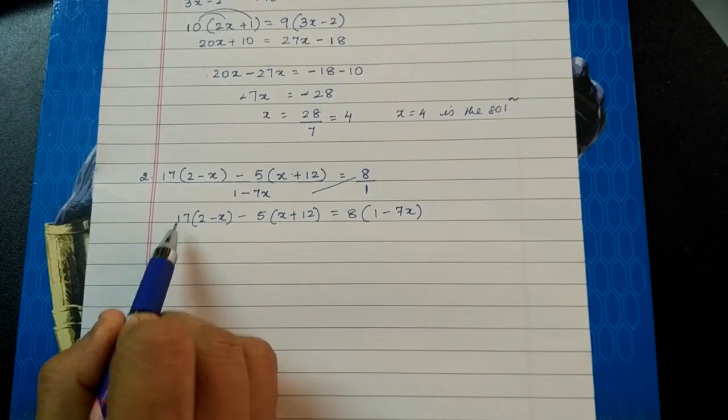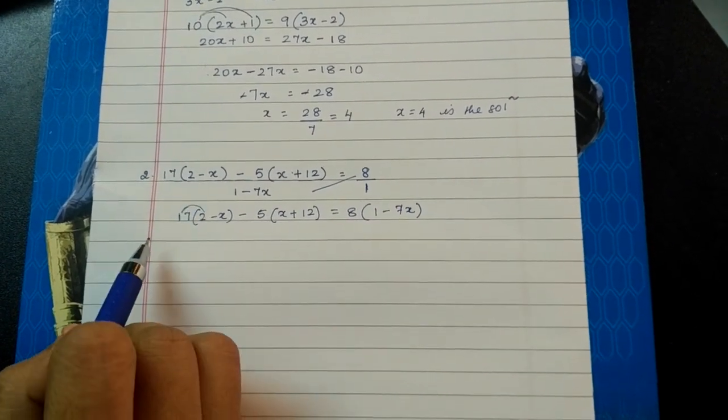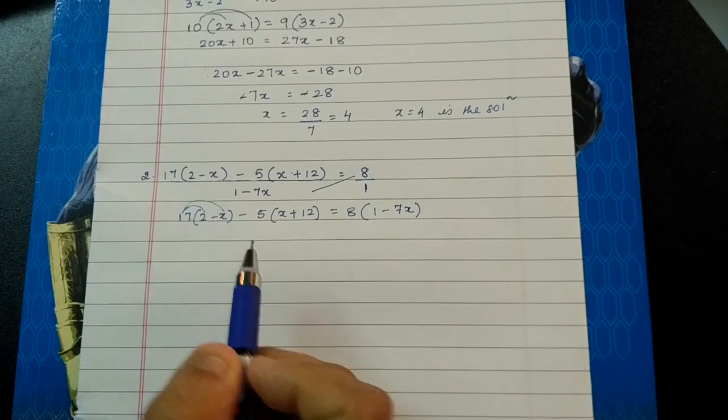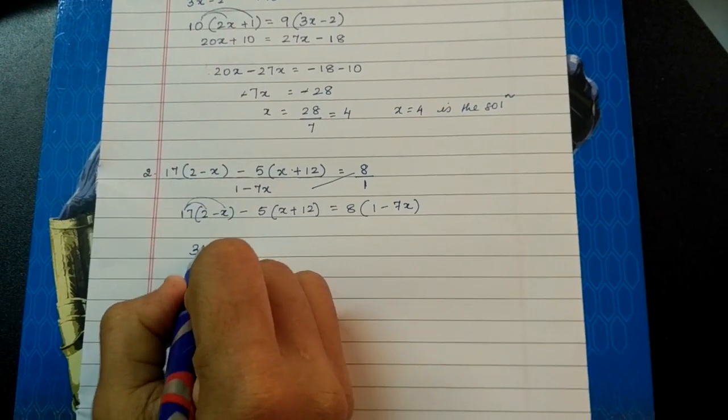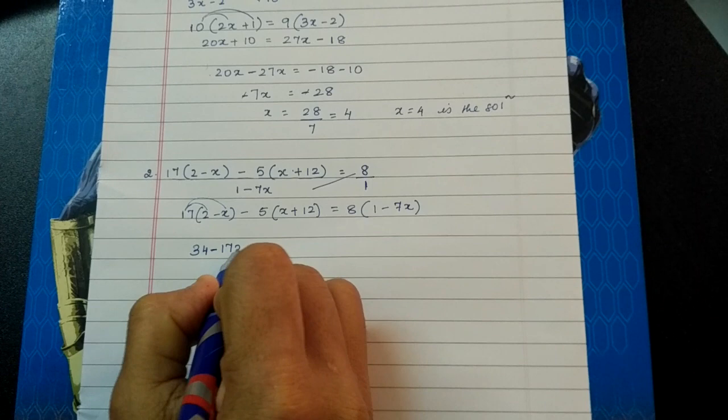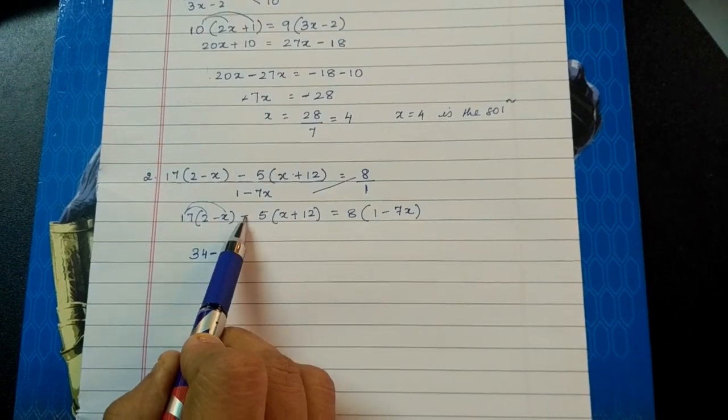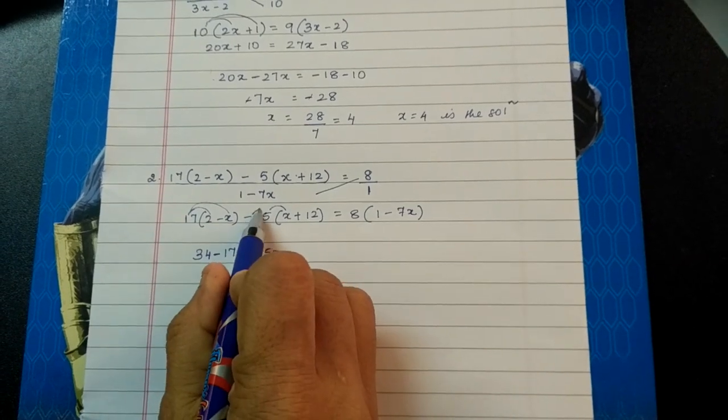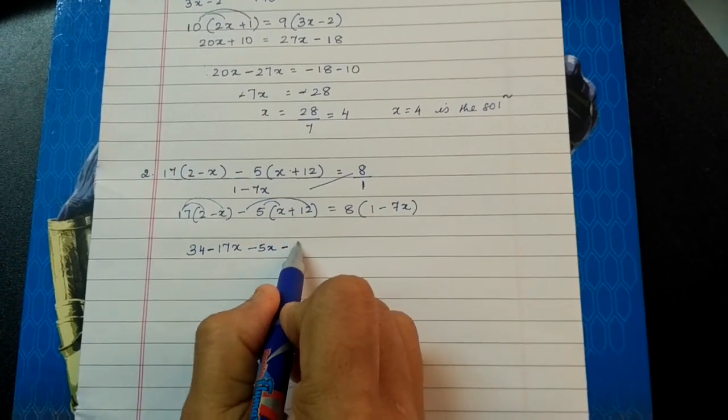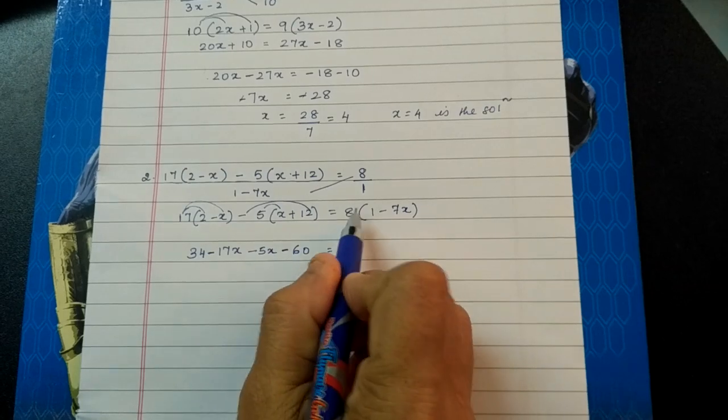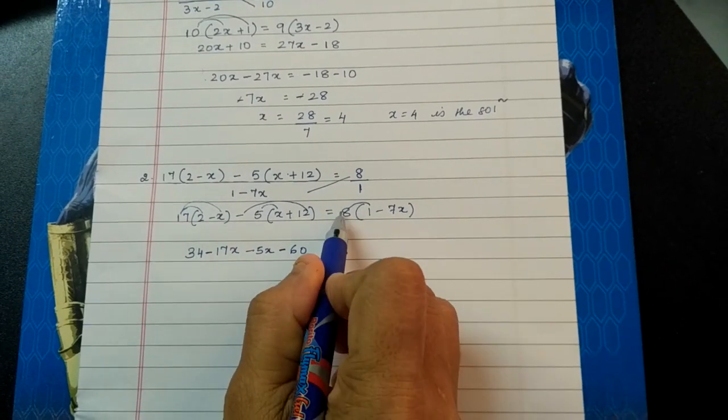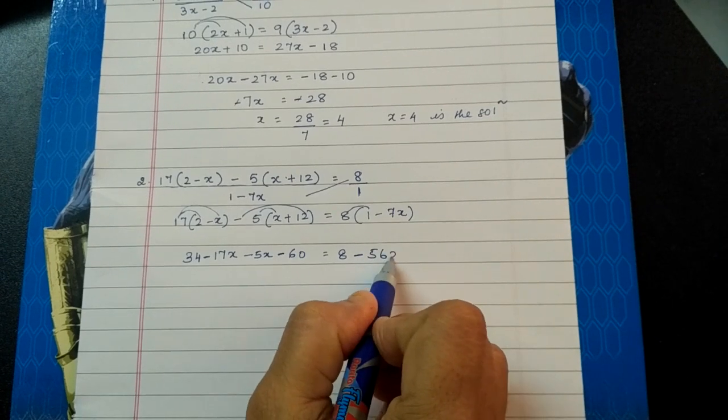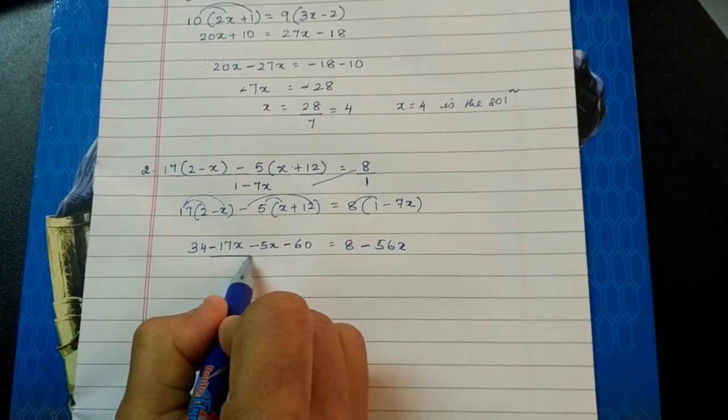Now let us solve this. 17 times 2 is 34, plus into minus is minus, so 17 into x is 17x. So it is 34 minus 17x. What about this? Minus 5 into x is minus 5x, and then minus 5 into plus 12 is minus 60. 8 times 1 is 8, plus into minus, 8 times 7 is 56x. So let us solve this, x like terms.